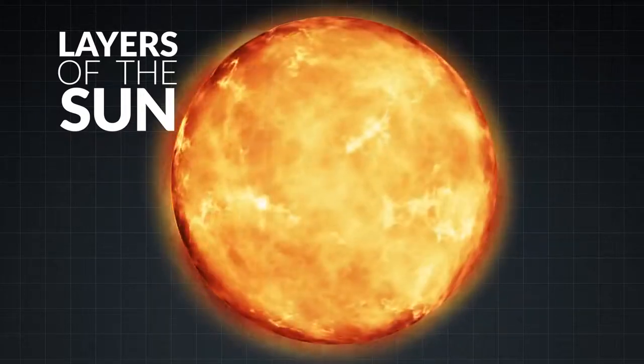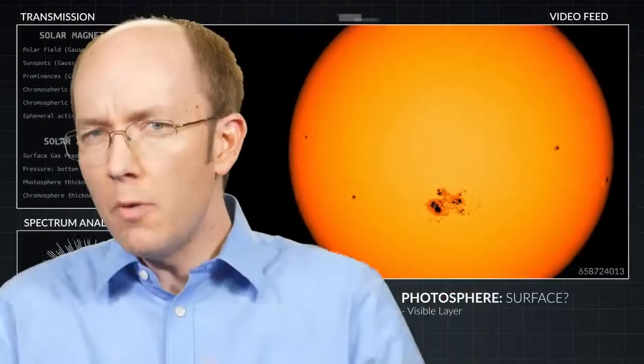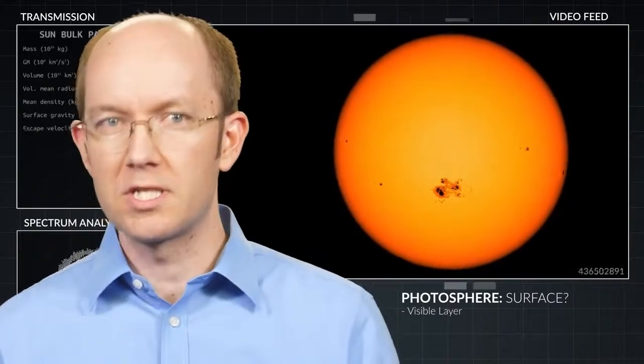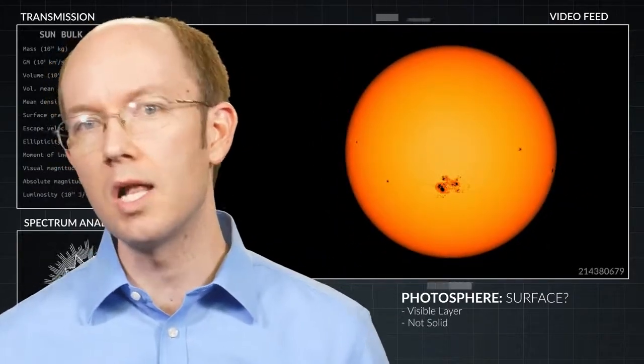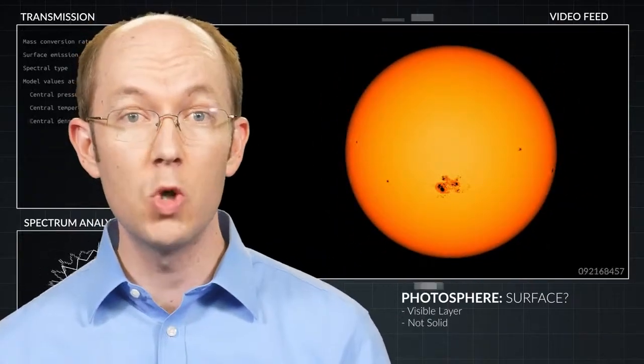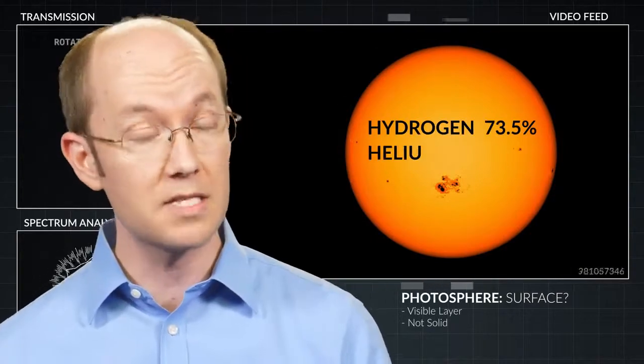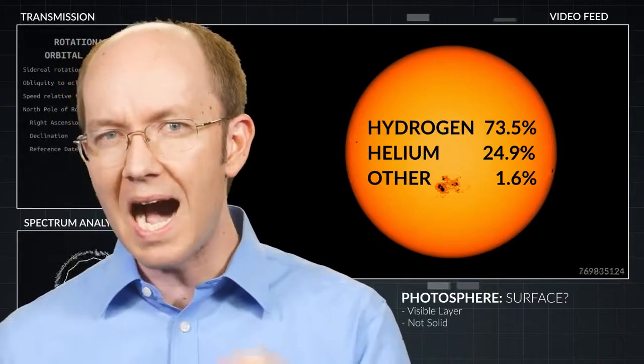While we use the term surface, we're not saying that the Sun is solid, rather that the Sun is composed primarily of hydrogen and some helium in a very highly energized state of matter called a plasma.